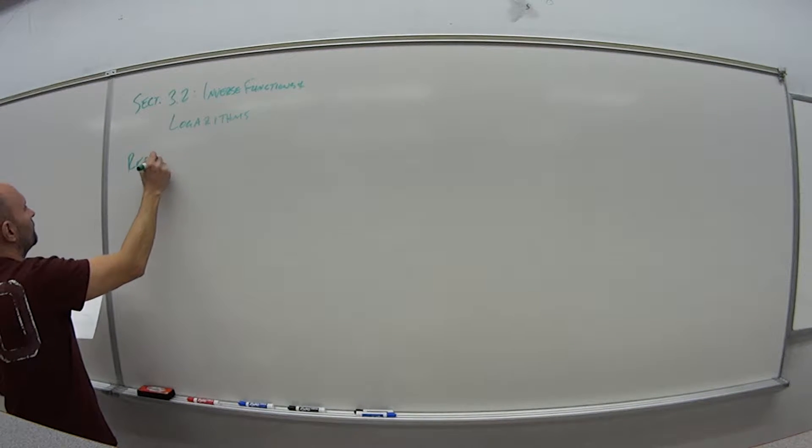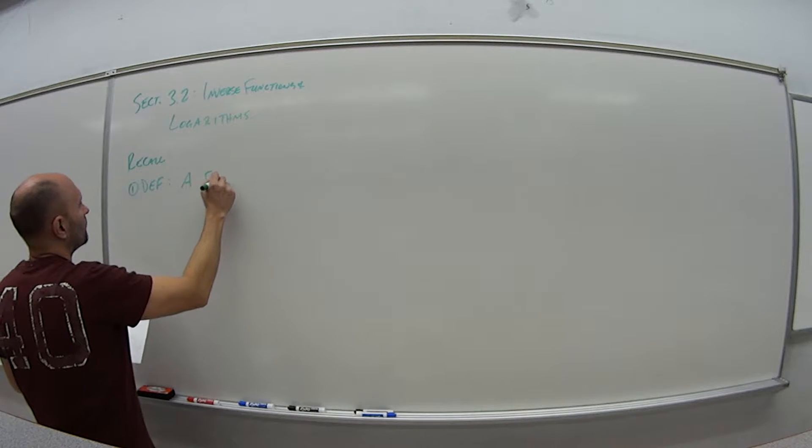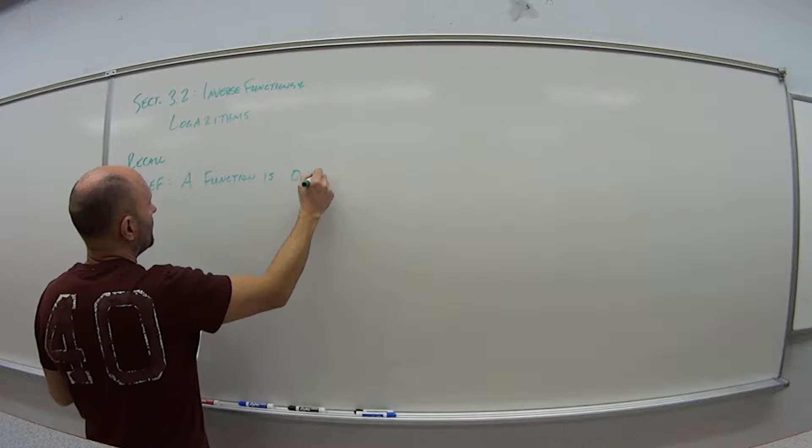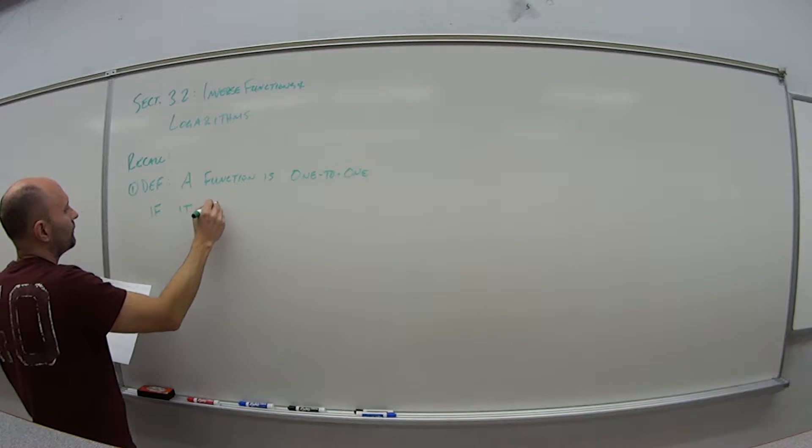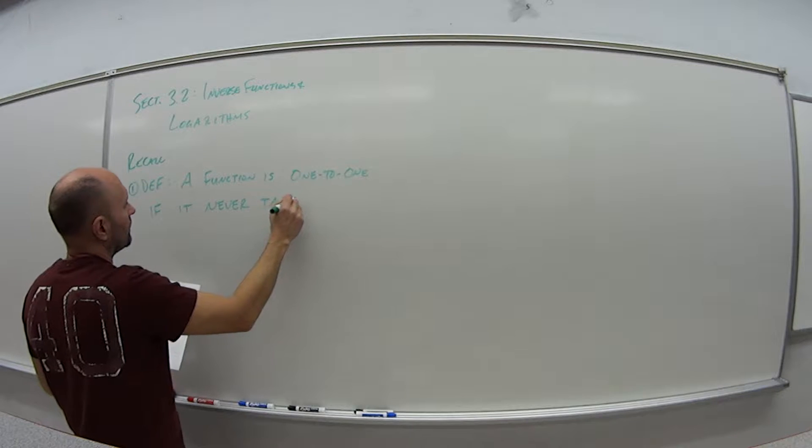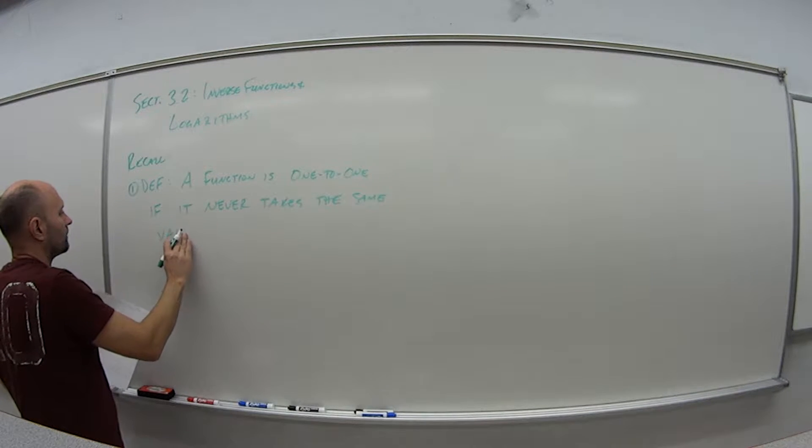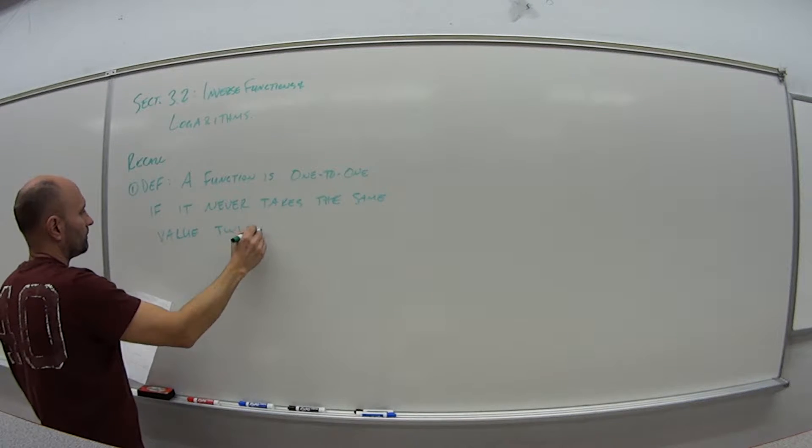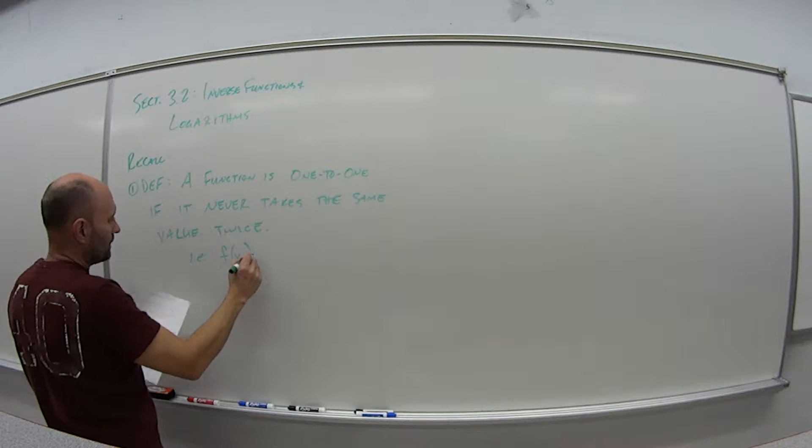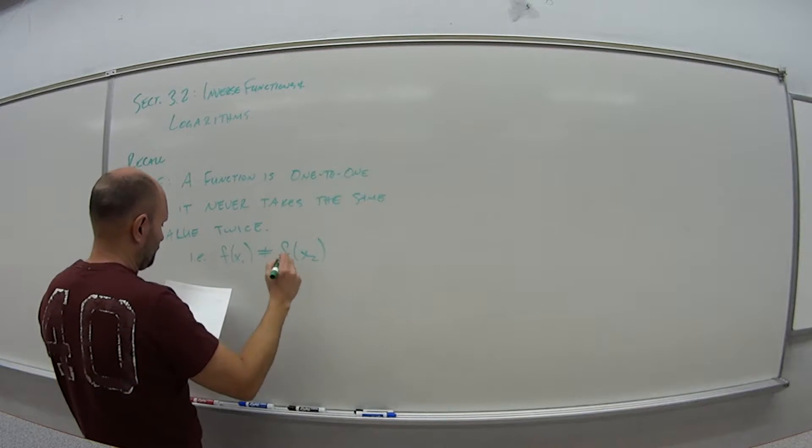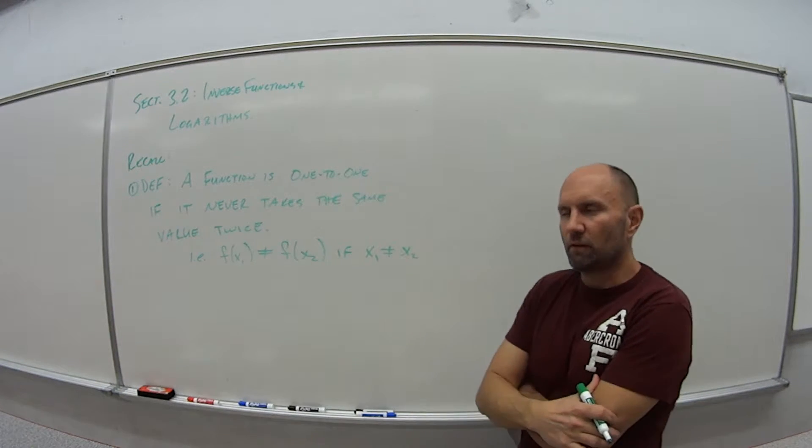Our first recall information is the following definition. A function is one to one if it never takes the same value twice. The mathematical way of writing this is f of x1 is not equal to f of x2 if x1 is not equal to x2.